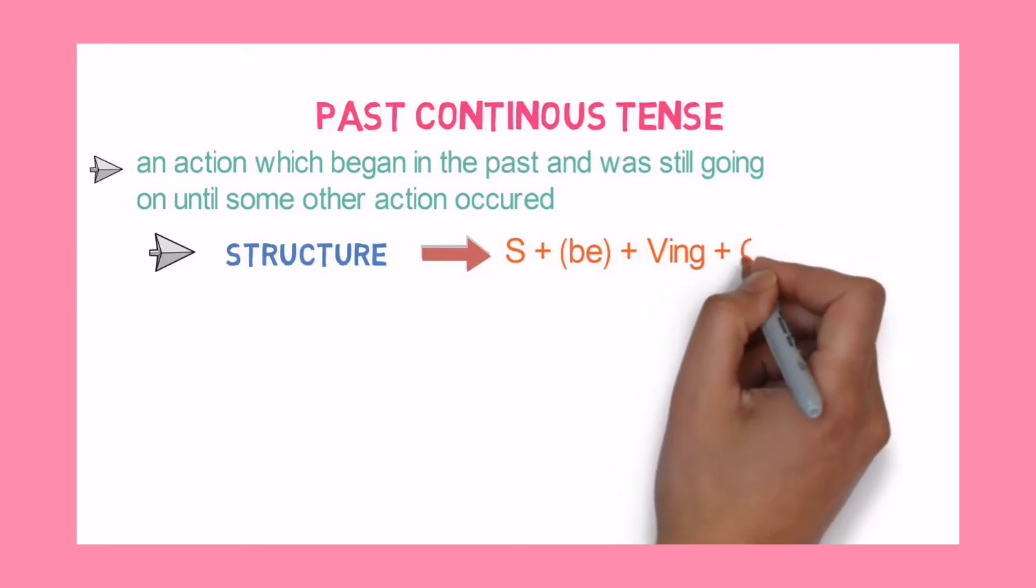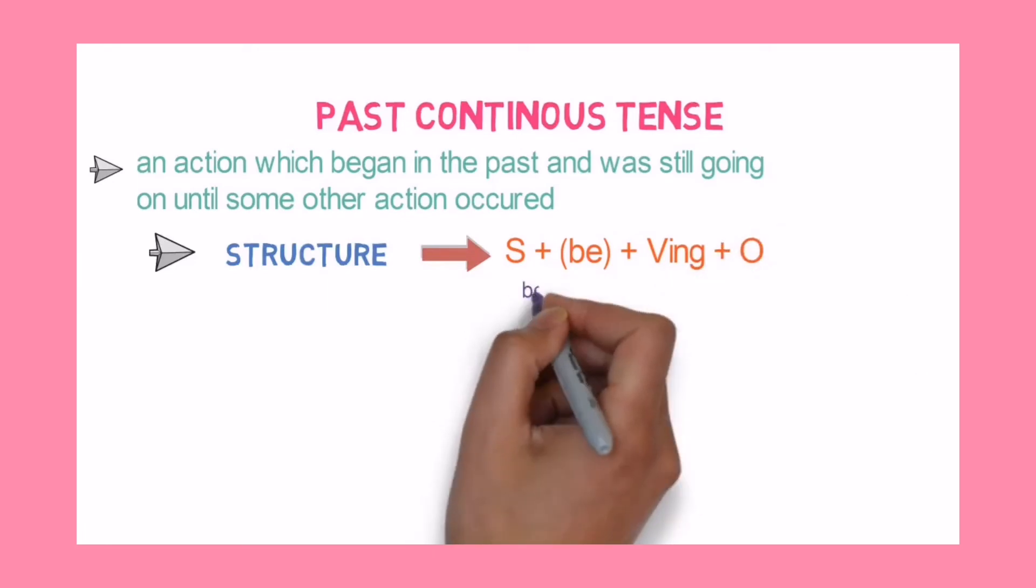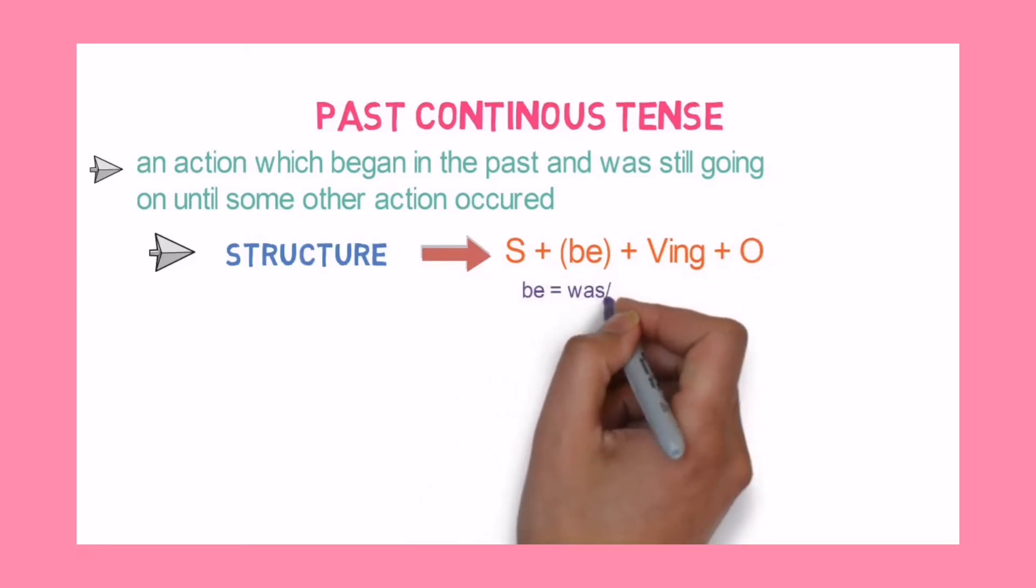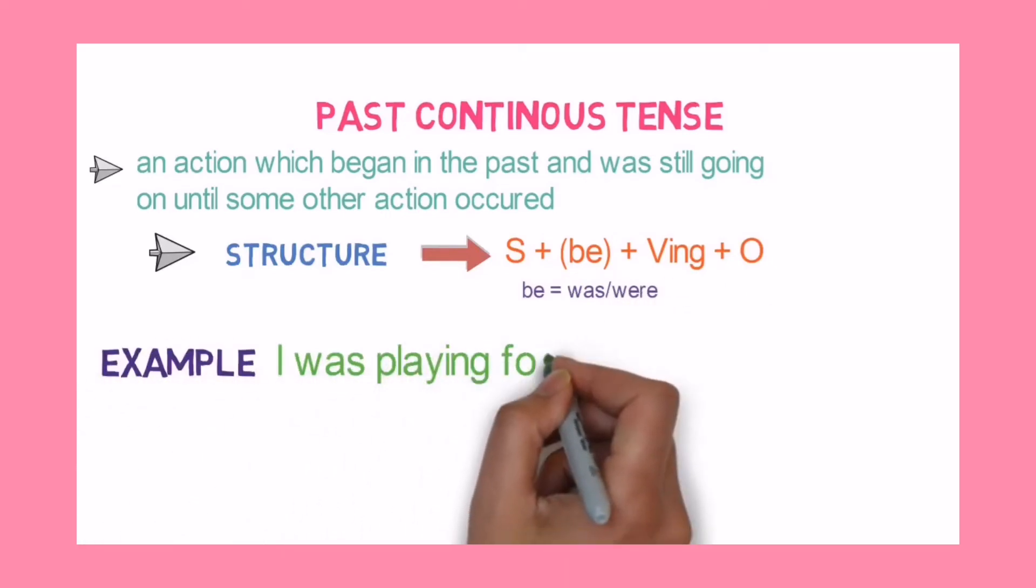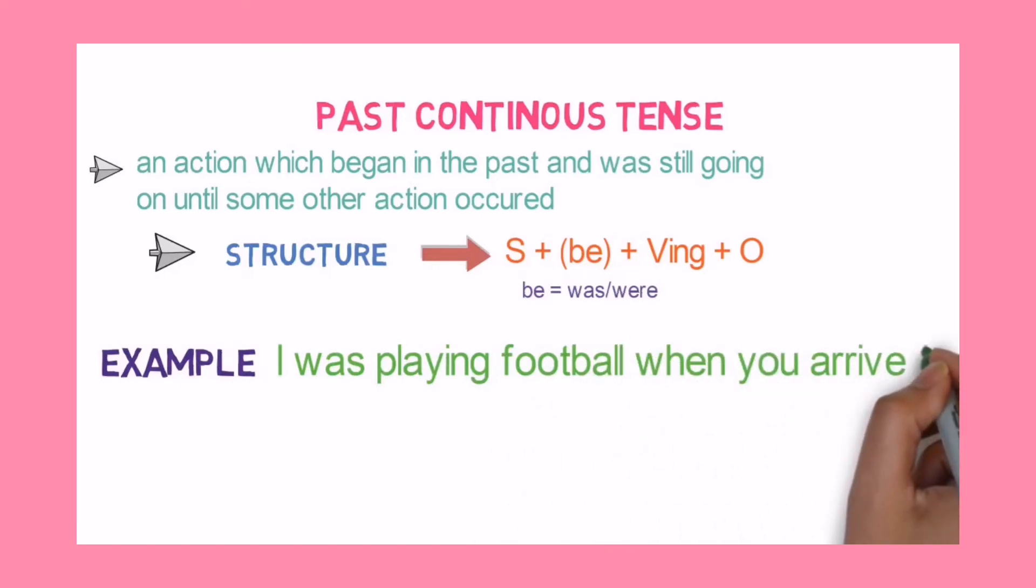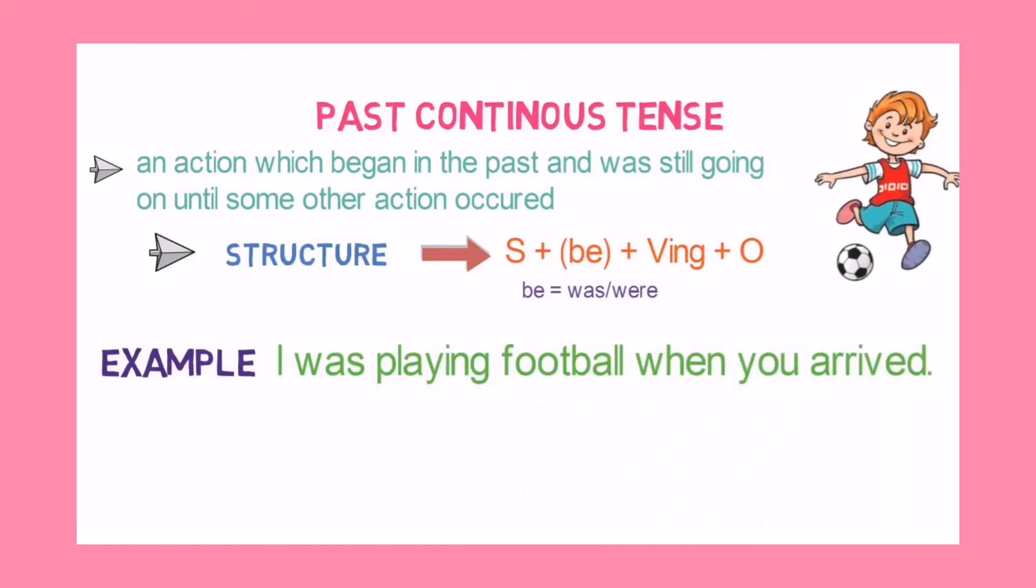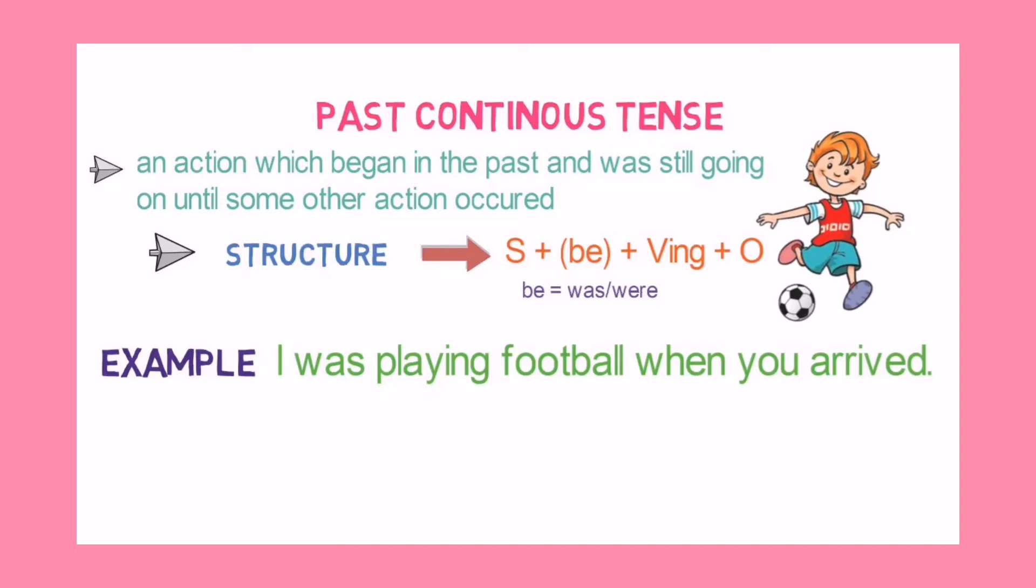Now here students, you have to be very clear that be here includes was or were. For example, I was playing football when you arrived. It means my action of playing was going on until you arrived. Let's look into the timeline.